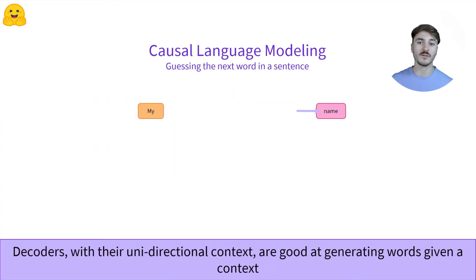Here's an example of how causal language modeling works. We start with an initial word, which is my. We use this as input for the decoder. The model outputs a vector of numbers, and this vector contains information about the sequence, which is here a single word.